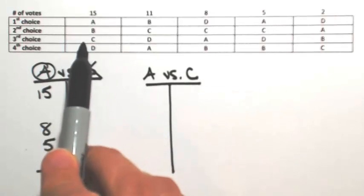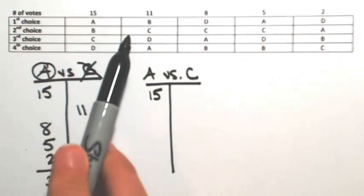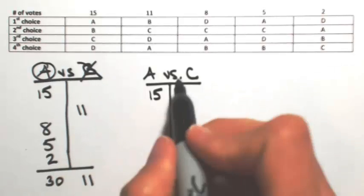So in the first set, A is over C, so A gets 15. In the second one, C is over A, so C gets 11.